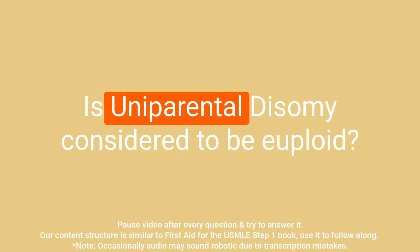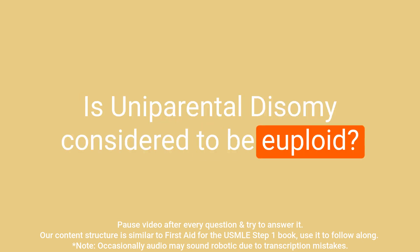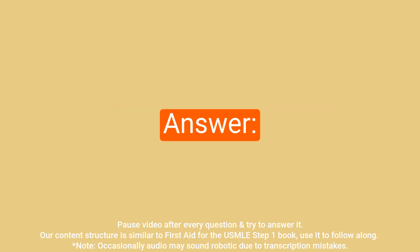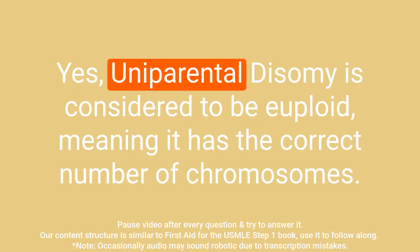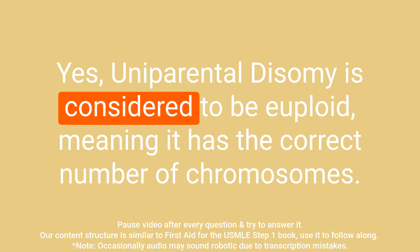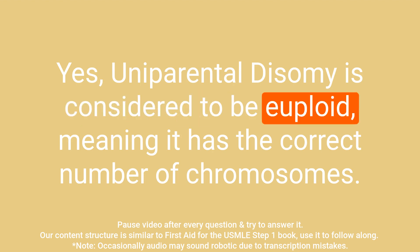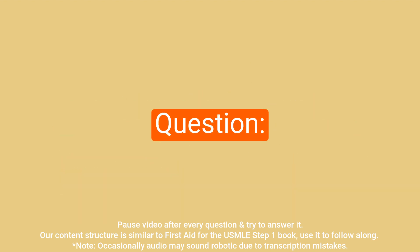Question: Is uniparental disomy considered to be euploid? Answer: Yes, uniparental disomy is considered to be euploid, meaning it has the correct number of chromosomes.